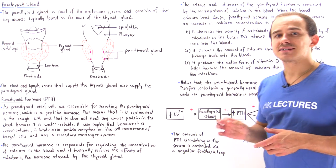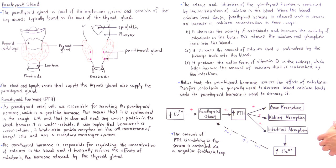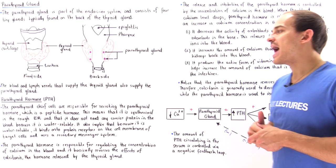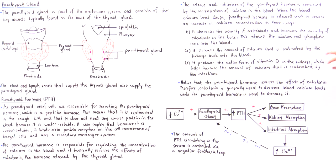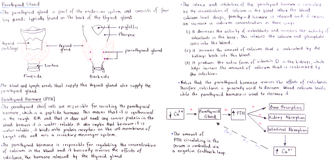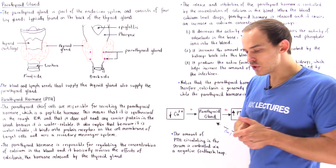It also affects our intestines. What our parathyroid hormone does is it activates vitamin D, producing the active form of vitamin D in the kidneys, and then this vitamin D basically helps to absorb more calcium in our intestines.